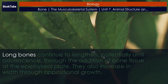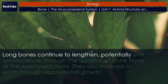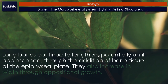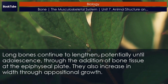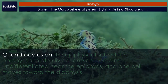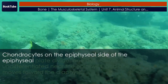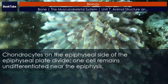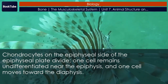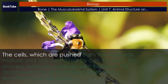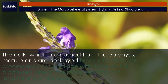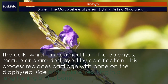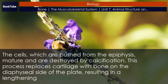Long bones continue to lengthen, potentially until adolescence, through the addition of bone tissue at the epiphysial plate, and also increase in width through appositional growth. Chondrocytes on the epiphysial side of the epiphysial plate divide — one cell remains undifferentiated near the epiphysis, and one cell moves toward the diaphysis. The cells pushed from the epiphysis mature and are destroyed by calcification. This process replaces cartilage with bone on the diaphysial side of the plate, resulting in a lengthening of the bone.